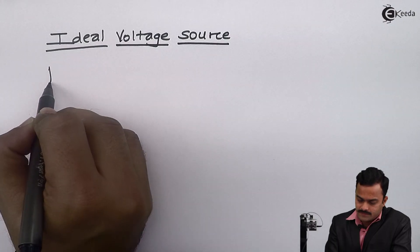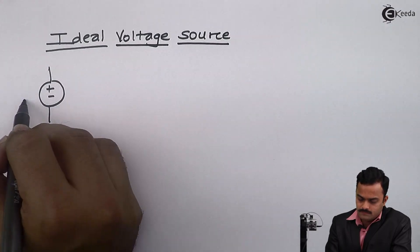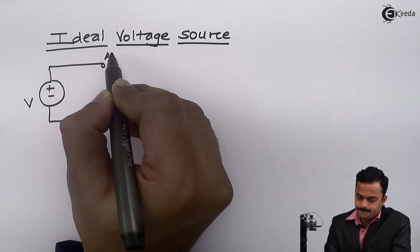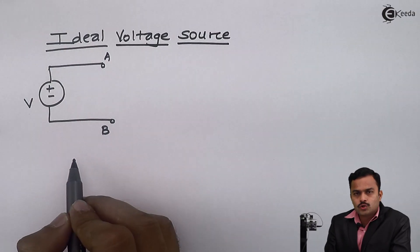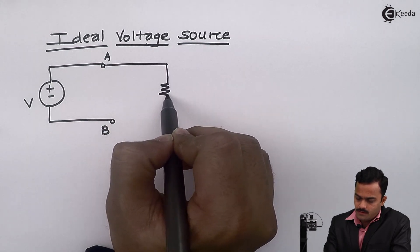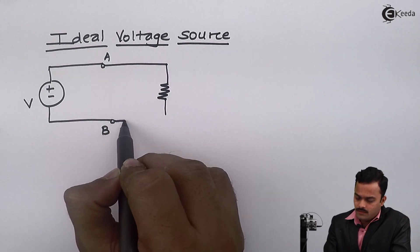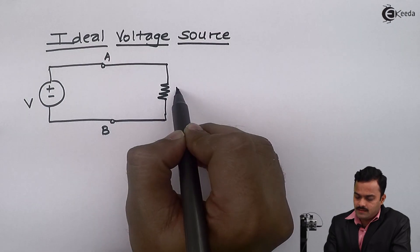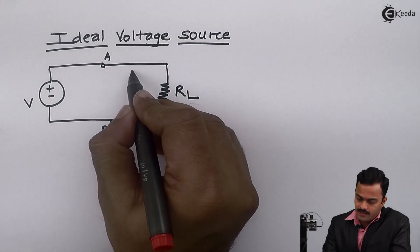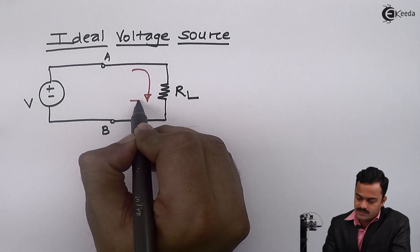I will consider a simple voltage source connected between points A and B. To this voltage source I will connect one load resistor RL. Now the circuit is closed, so current IL will flow through the load resistor.